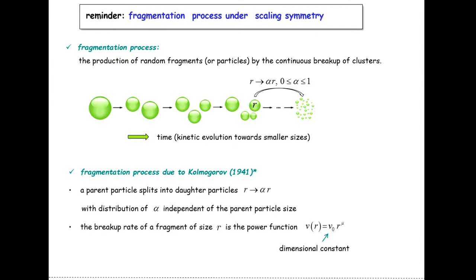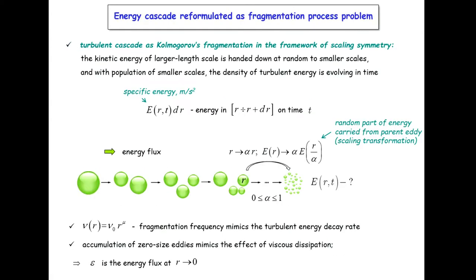Kolmogorov proposed in 1941 — the same year as his famous turbulence theory — that parent particles split into daughter particles with a distribution of alpha independent of the parent particle size, described at constant fragmentation frequency. We consider the breakup process with a frequency that is a power function of the size of the parent fragment, where nu_0 is the dimensional constant. The kinetic energy is handed down to smaller scales at random, and the density of turbulent energy evolves in time.